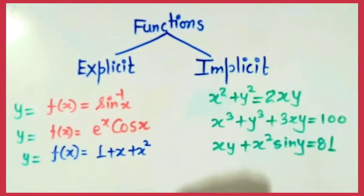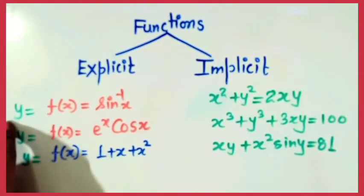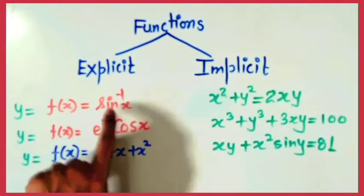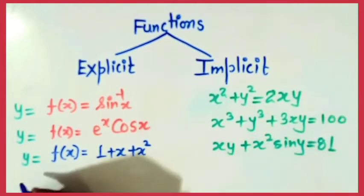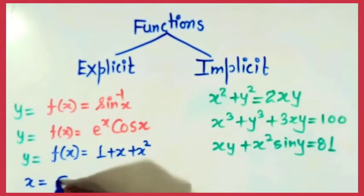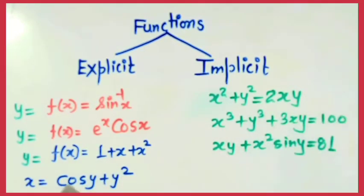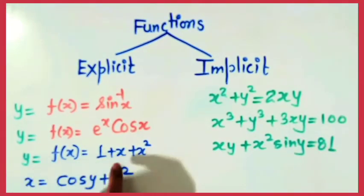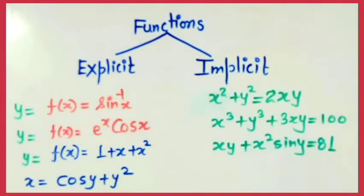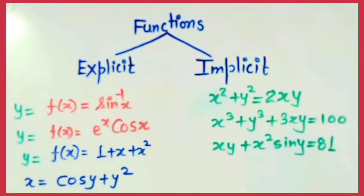What is an explicit function? If y is given in terms of x, or x is given in terms of y. In these examples, x is given in terms of y or y is given in terms of x. So they are all explicit functions — meaning if one variable can be expressed in terms of the other, the function is called an explicit function.